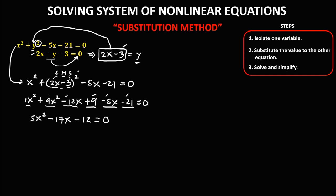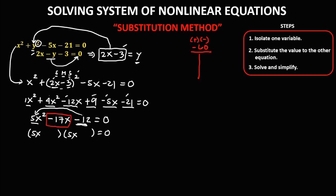Since this is a quadratic equation, we solve it using factoring. In factoring, we write 5x for both factors: (5x)(5x). Then negative 12 multiplied by 5 gives negative 60. We list all the factors of negative 60 — since the product is negative, one factor is positive and one is negative, and since the middle term is negative, the bigger number must be negative. The factor pairs are: negative 60 times 1, negative 30 times 2, negative 20 times 3.